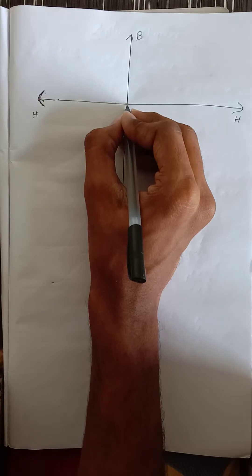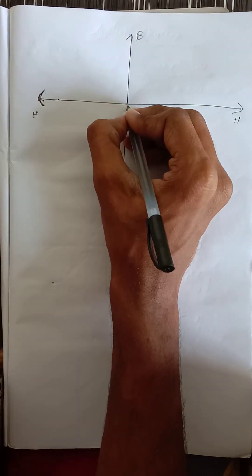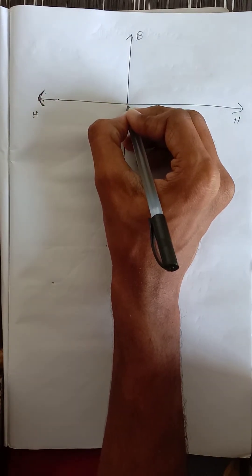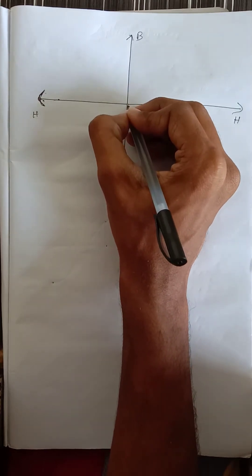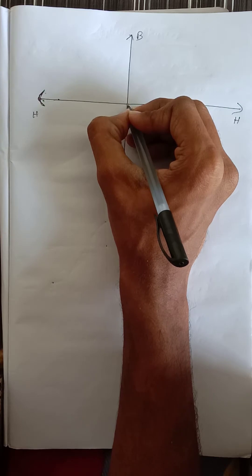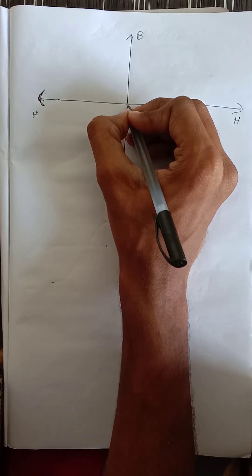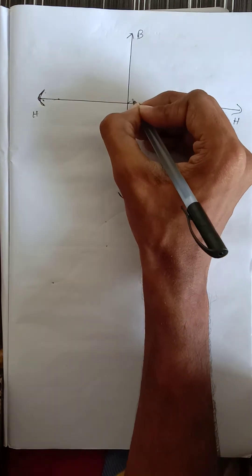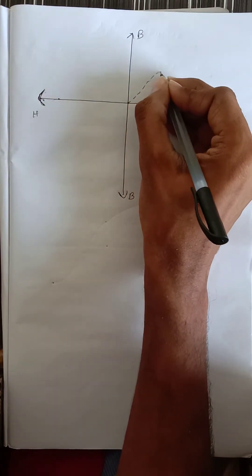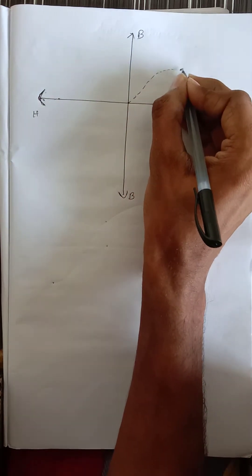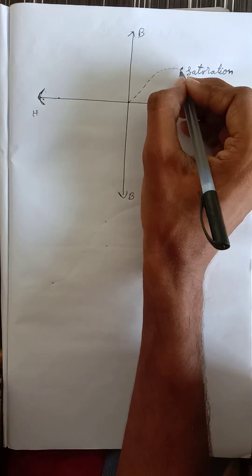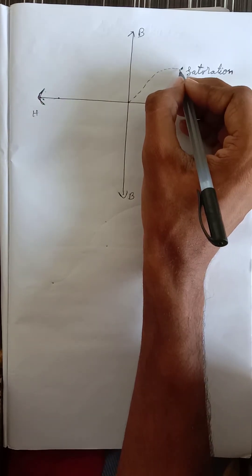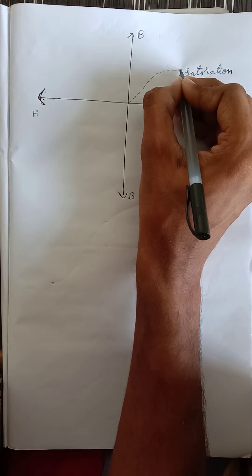Initially, the substance is at zero — there is no external magnetic field on the material. When the material is placed in an external magnetic field and we increase the applied magnetic field, the material magnetizes rapidly and reaches a point called the saturation point, and stays constant there. The material does not magnetize further at this point.